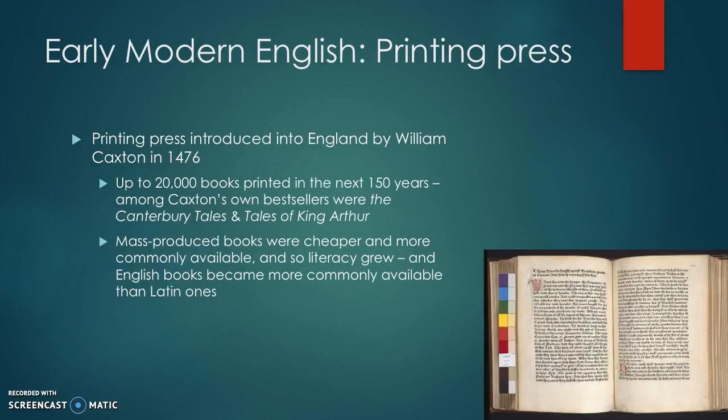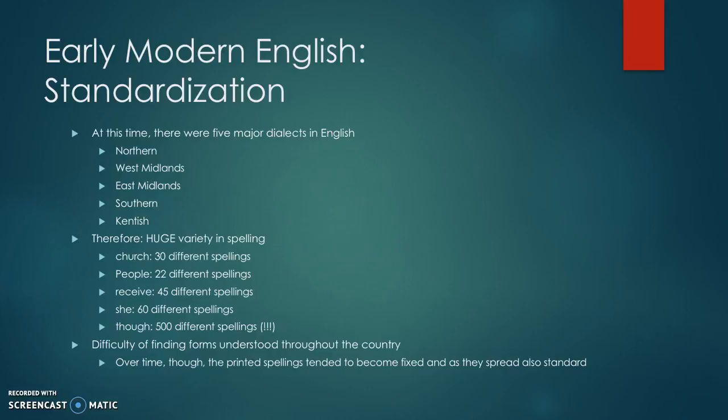Mass-produced books were cheaper and more common — they were easier to get. So along with more available books, literacy, the ability to read and write, started to grow. English books became more commonly available than Latin ones, and a process called standardization started to happen.